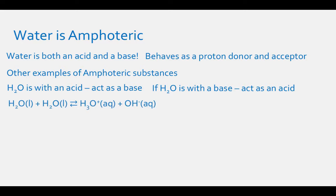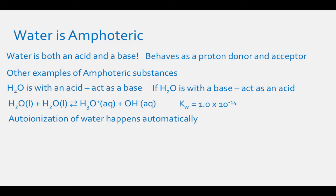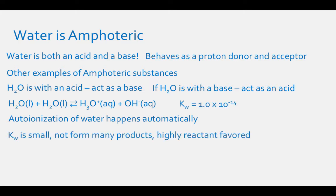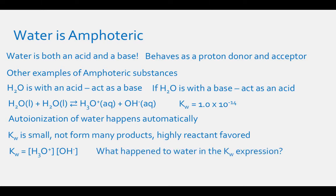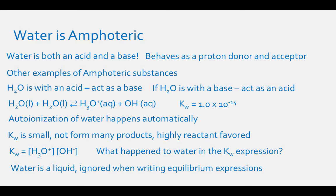If water can act as an acid or a base, when two liquid waters react together, they form H3O+ (aqueous) and OH- (aqueous). The auto-ionization of water has a special equilibrium constant associated with it called the Kw value. The reason it is called the auto-ionization of water is because the ionization of water happens automatically. The Kw value is very small, 1.0 times 10 to the negative 14th, so it will not form many products and instead be highly reactant favored. The equilibrium constant expression for Kw is the concentration of H3O+ times the concentration of OH-. Water is a liquid, so it is ignored when writing equilibrium constant expressions.